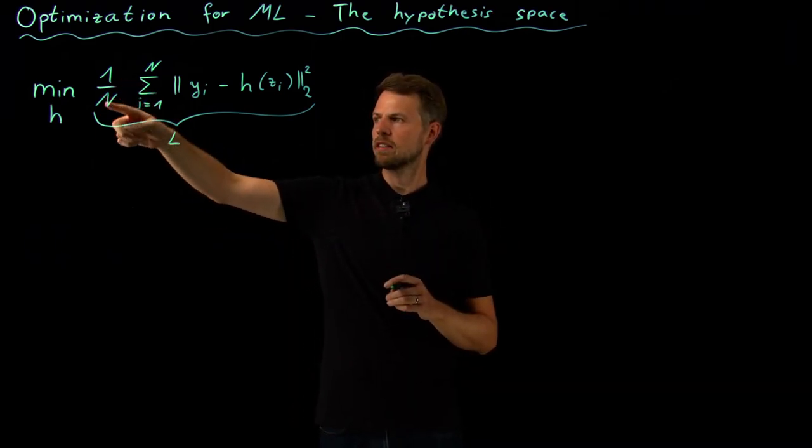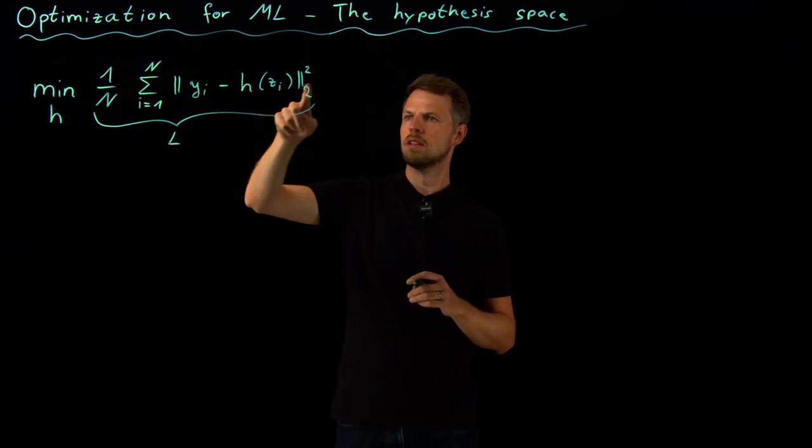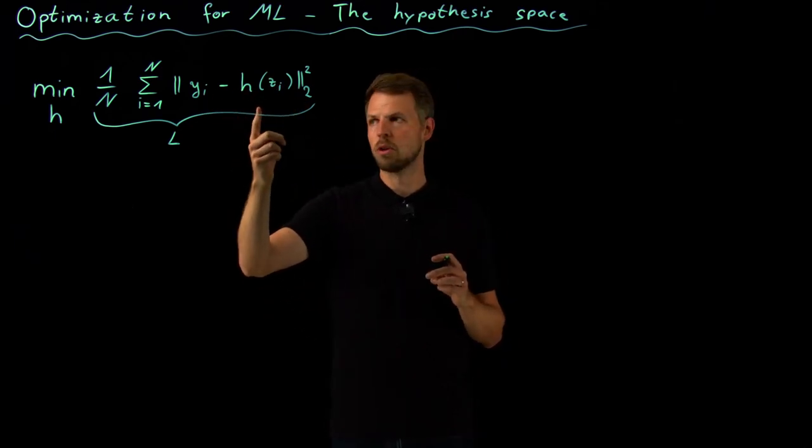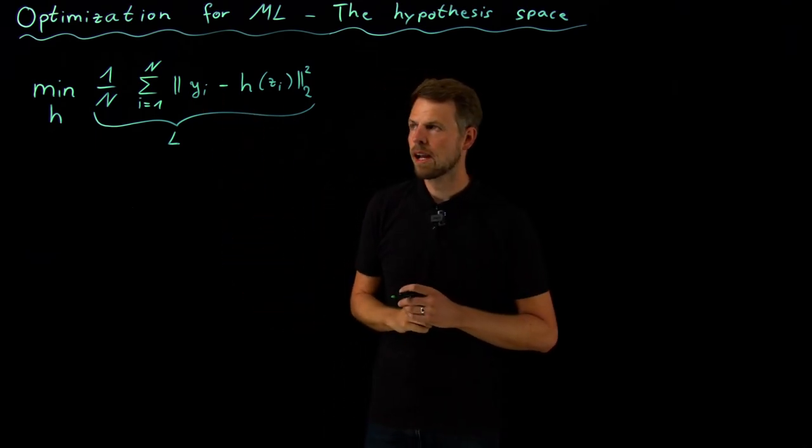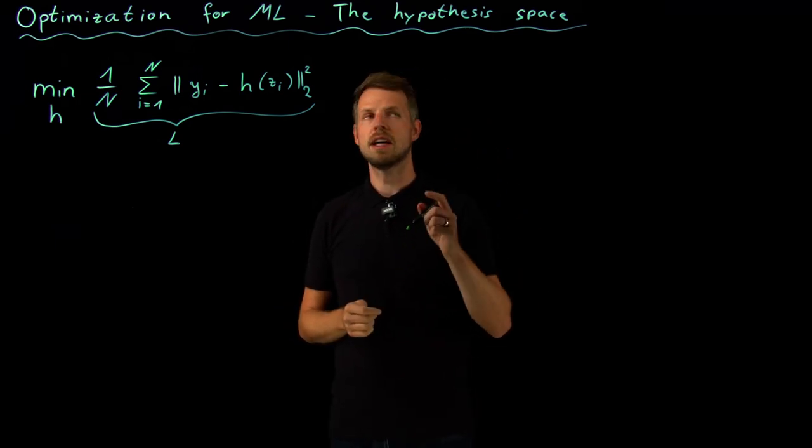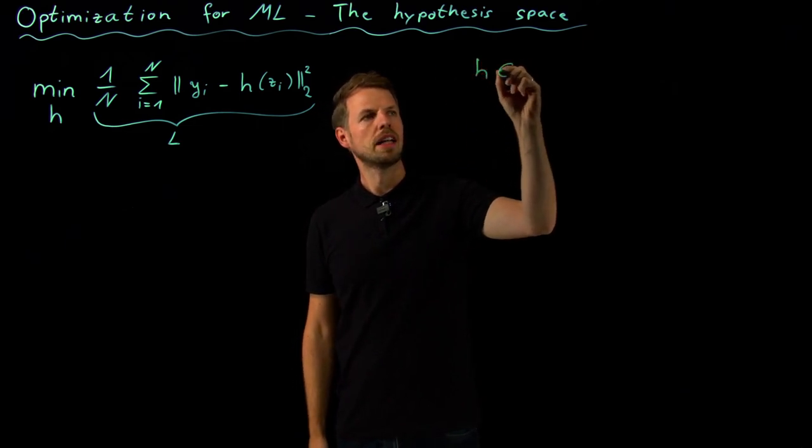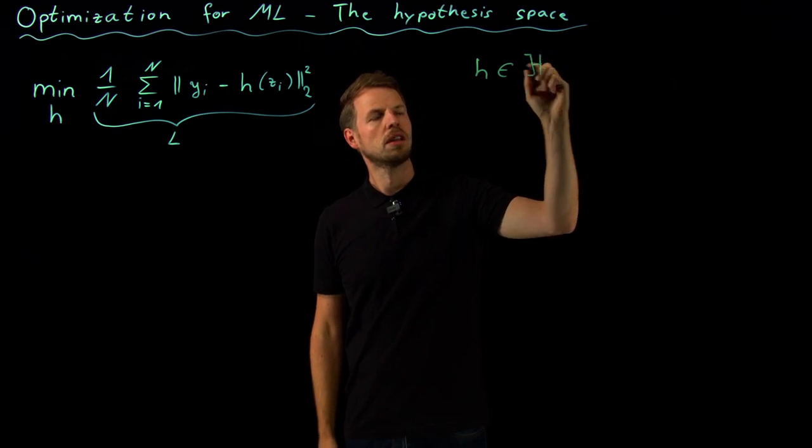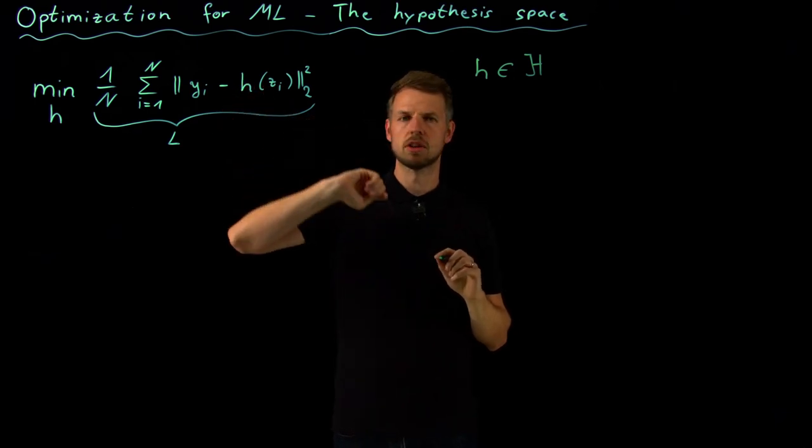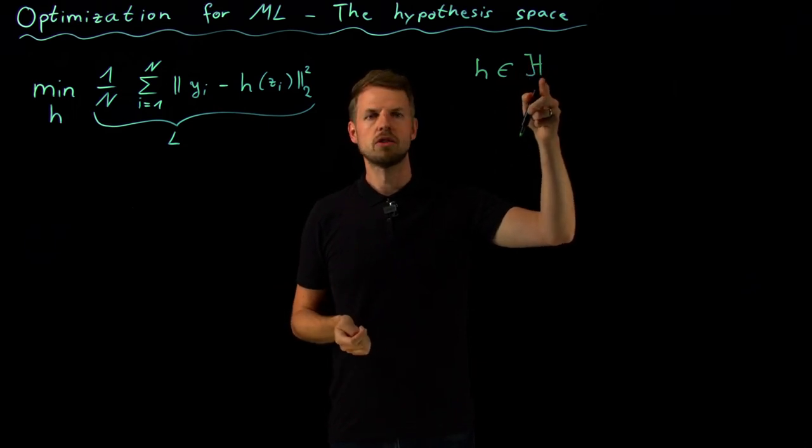So what this is, is given a dataset of size capital N, we take the mean over all the samples and then the squared distance, the Euclidean distance between the input being mapped forward by our model and the output. And so what we said is that there is a key component which is the hypothesis space H. So this model h is an element from a hypothesis space H that we can define.